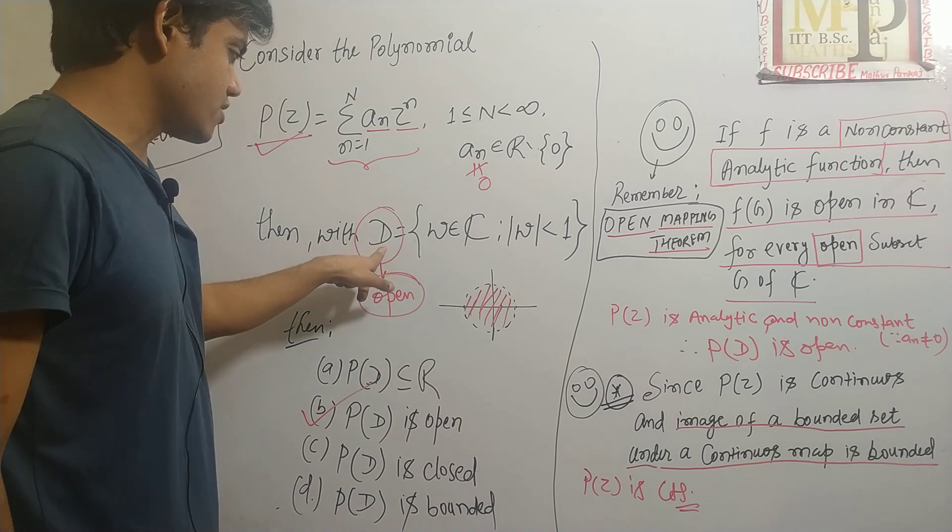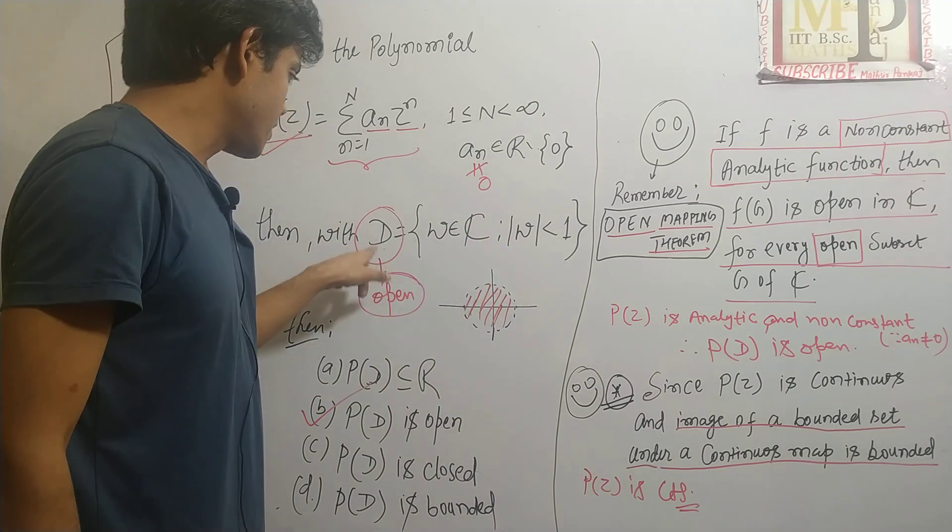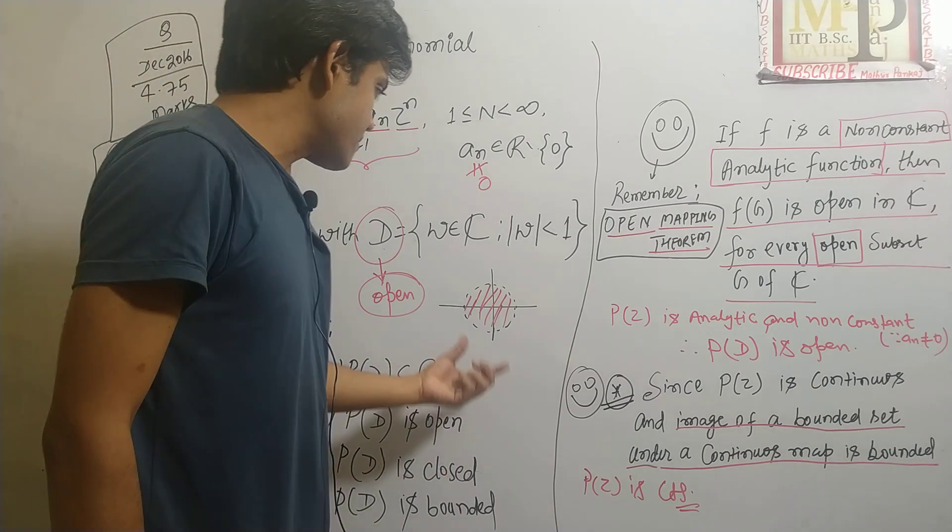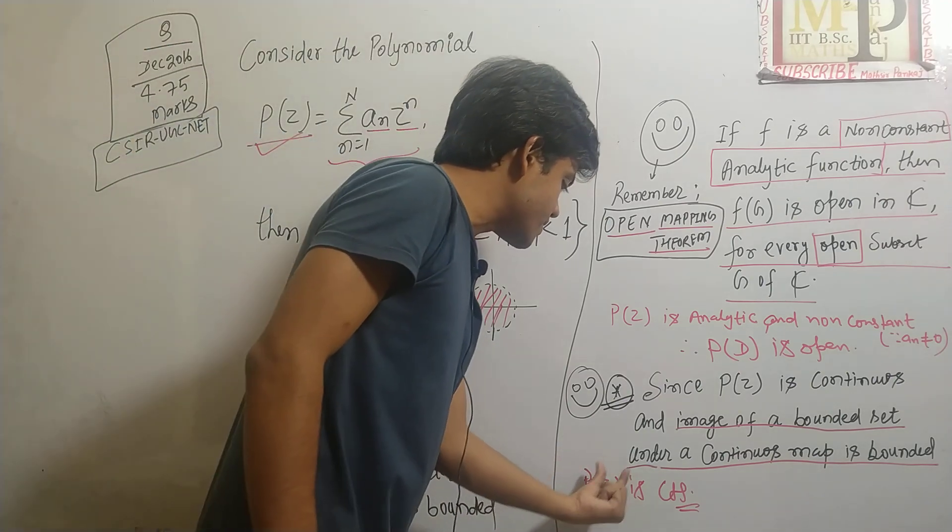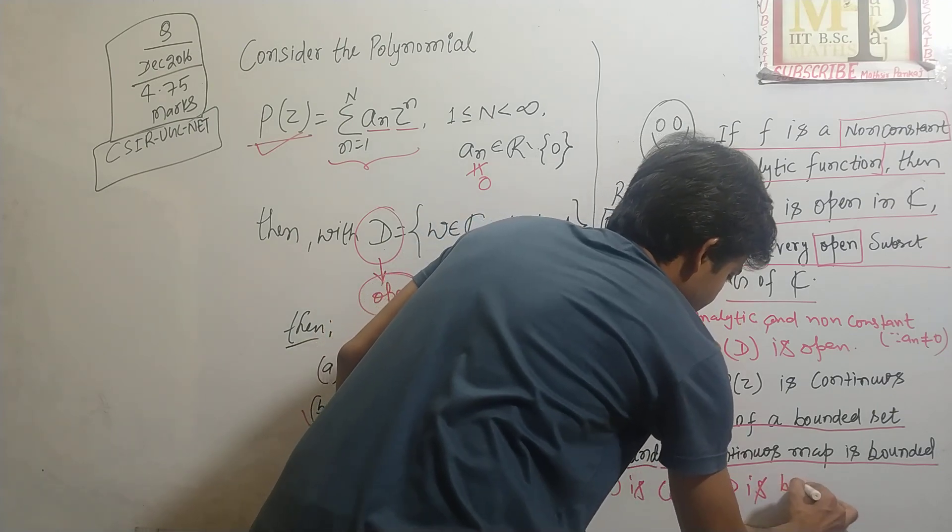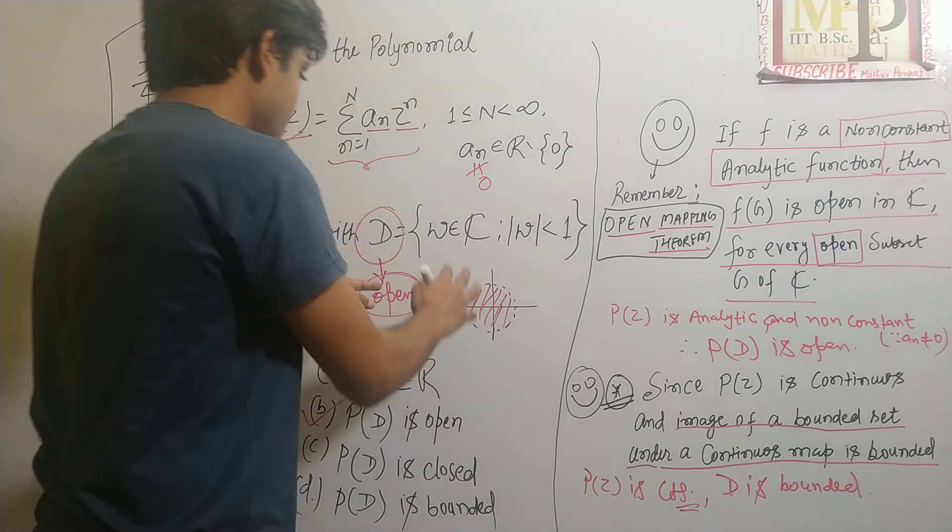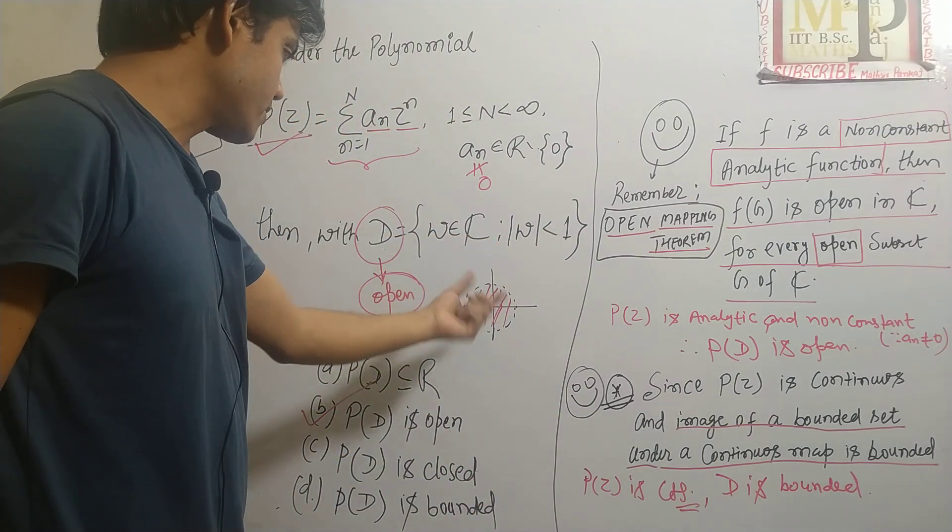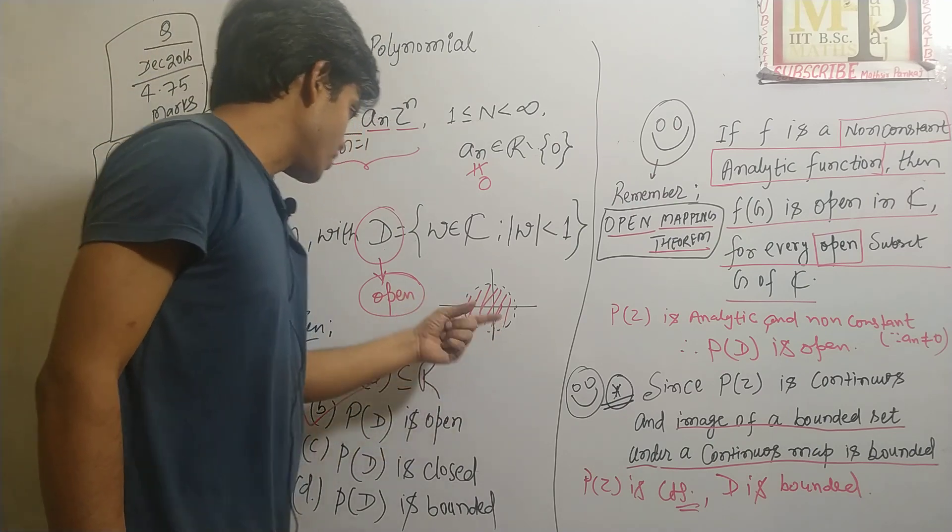And your D is bounded as well. You can see this D is bounded. So as D is bounded and P of Z is continuous, D is bounded. From the definition of bounded set, D is obviously bounded.